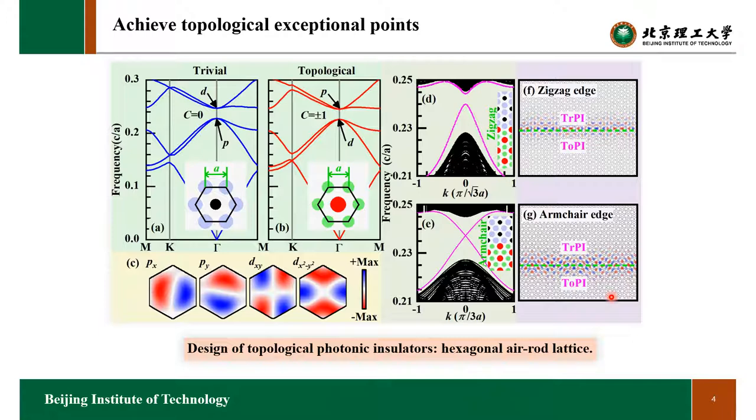We use this coupled structure to achieve such an exceptional point. The structure is composed of hexagonal air rods in the silicon plate. We use two types of lattices: one is topological and the other is trivial.